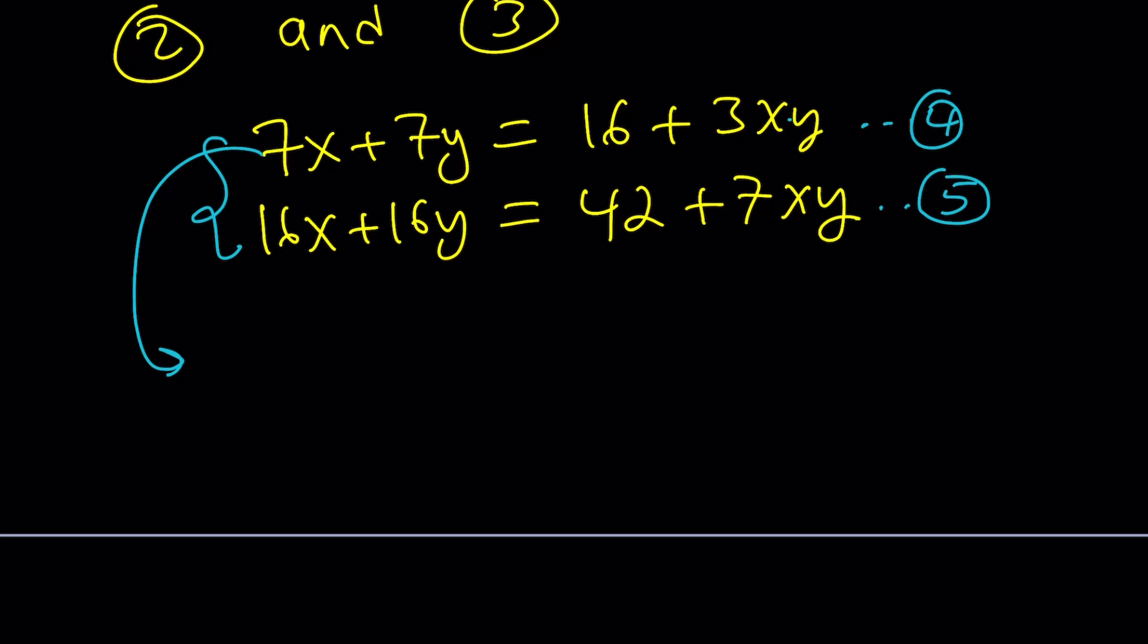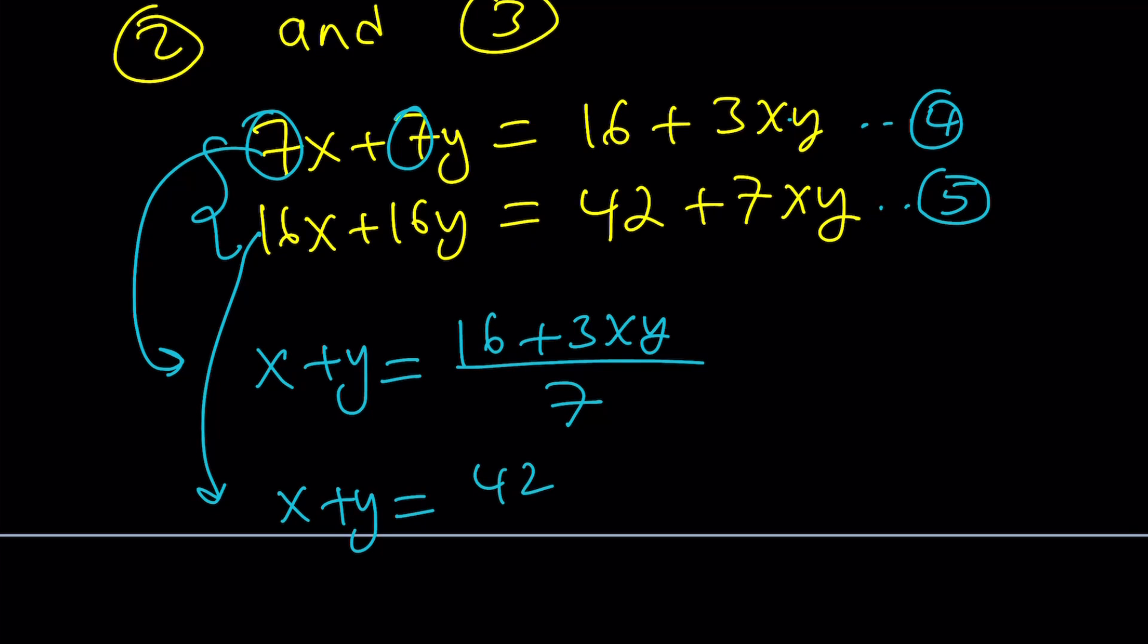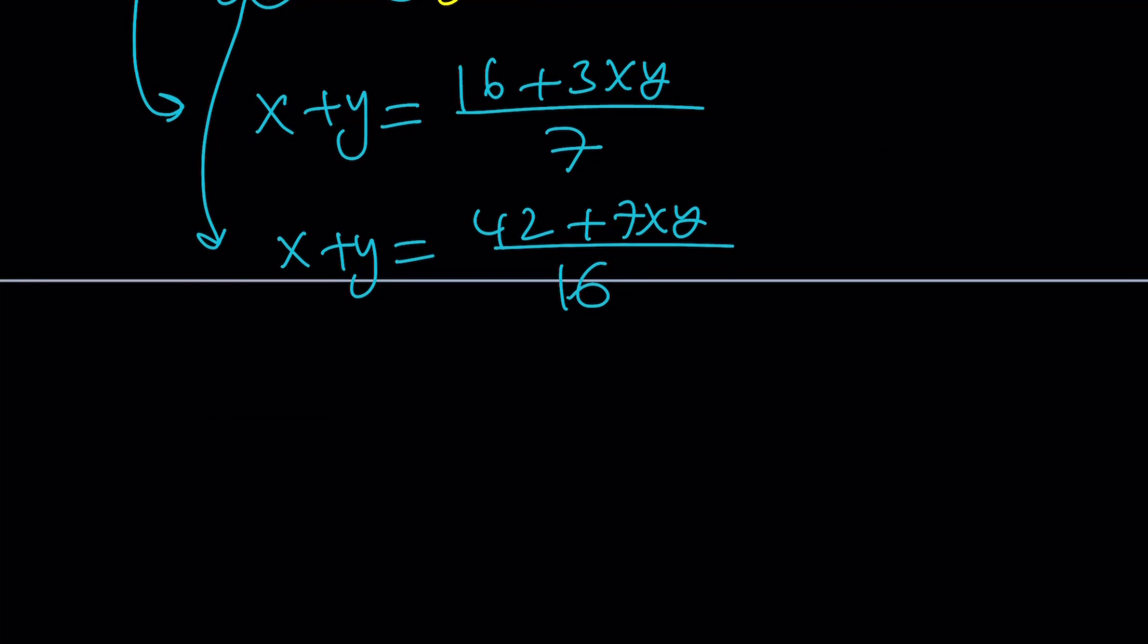I can basically take out a 7, factor it out. So, x plus y becomes 16 plus 3xy all over 7. And from equation number 5, x plus y becomes 42 plus 7xy over 16 because I can factor out 16. Make sense? And then, since both of these are x plus y, they're equal. If two things are equal to the same thing, then they are equal.